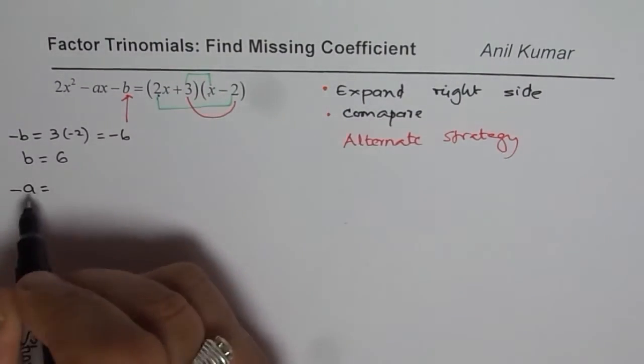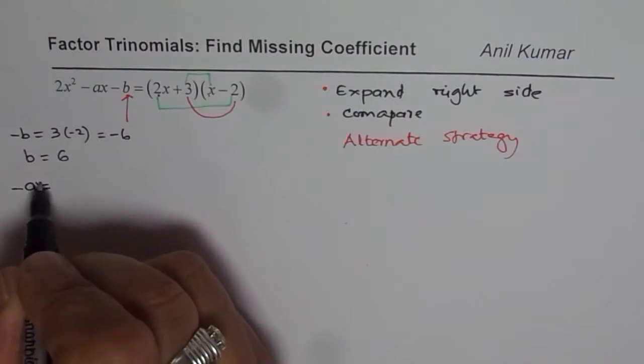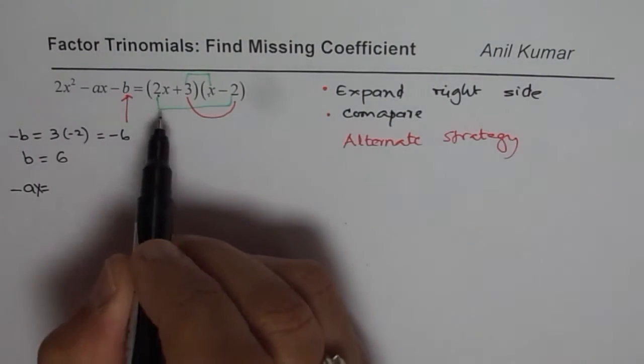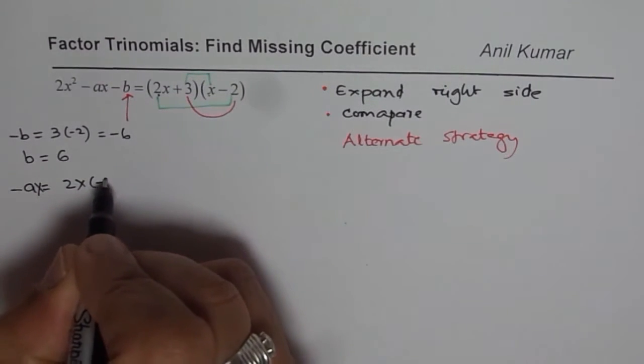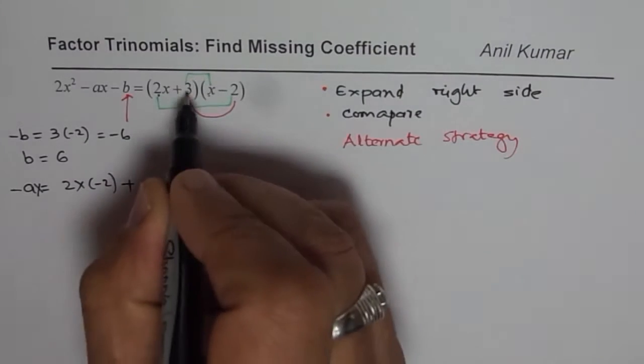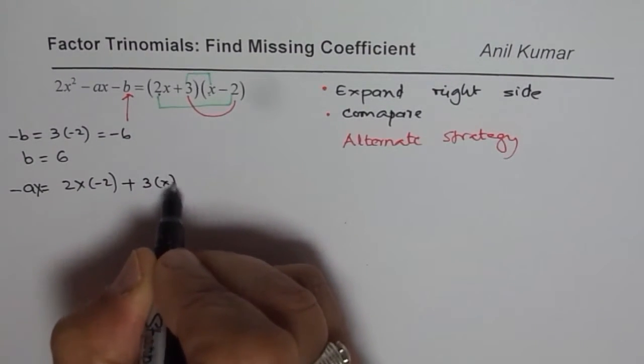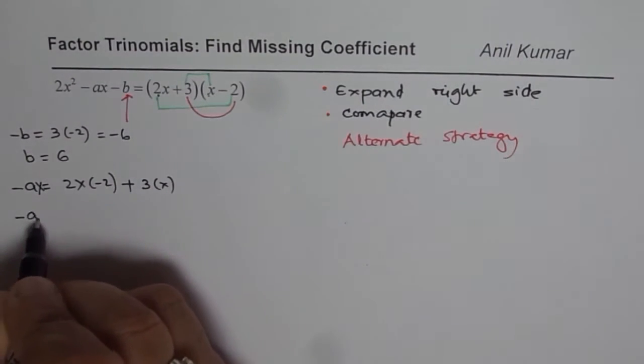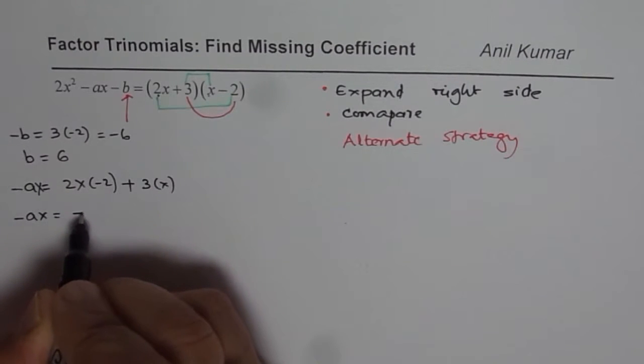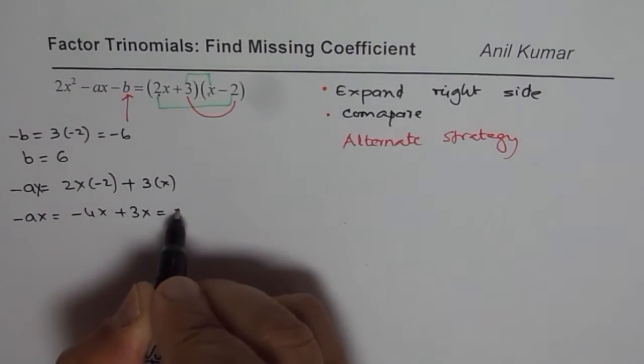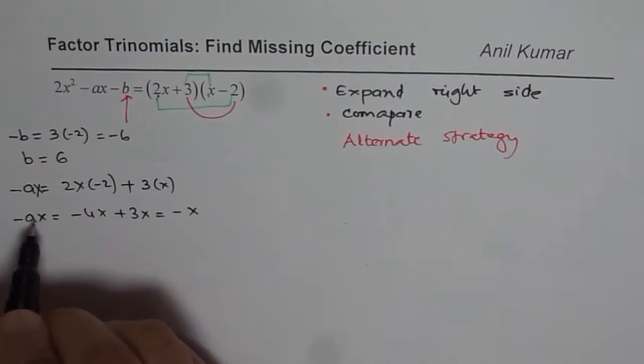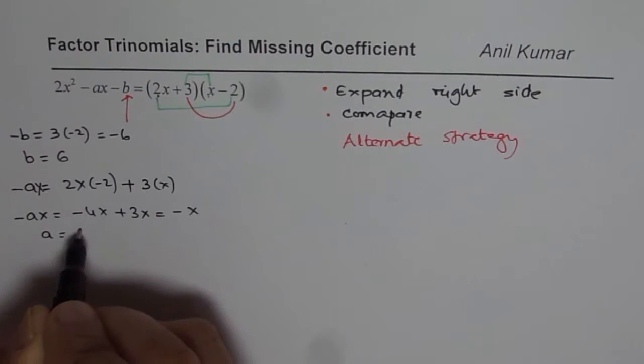So we'll write -ax = 2x × (-2) + 3 × x. So we have -ax = -4x + 3x, which is -x. And if you compare, a = 1.